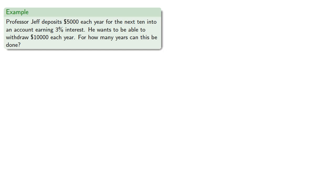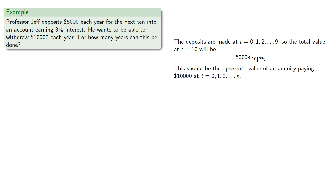Another scenario is how long will the money last? Suppose Professor Jeff deposits $5000 each year for the next 10 into an account earning 3% interest. He wants to be able to withdraw $10,000 each year. For how many years can this be done? The deposits are made at t equals 0, 1, 2 and so on. So the total value at t equals 10 will be 5000 s double dot angle 10 at 3%. This should be the present value of an annuity paying $10,000 at t equals 0, 1, 2 up to n, where we don't know what n is, but we can write 10,000 a double dot angle n at 3%. And we want these two values to be equal.